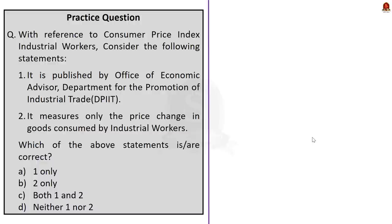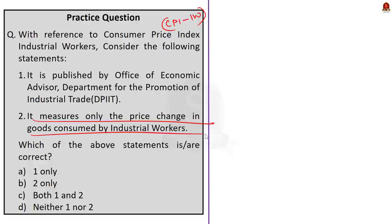Look at this question. With reference to the Consumer Price Index, consider the following statements. Statement 1: it is published by the Office of Economic Advisor, Department for the Promotion of Industry and Internal Trade (DPIIT). Statement 2: it measures only the price change in goods consumed by industrial workers. Which of the above statements are correct? Option A: 1 only. Option B: 2 only. Option C: both 1 and 2. Option D: neither 1 nor 2. The correct answer is option D, neither 1 nor 2 — both statements are incorrect.